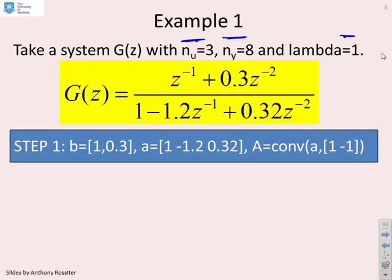The first step is to enter the model. And what we can do is we can define the models in MATLAB using vectors to represent the coefficients. So B, you'll see we've got coefficients 1 and 0.3. And you'll remember this code is written in such a way that it assumes B has always got at least a single delay. So we don't bother putting an extra coefficient of 0 in. We let the code deal with that.